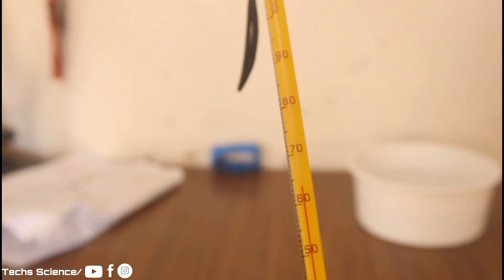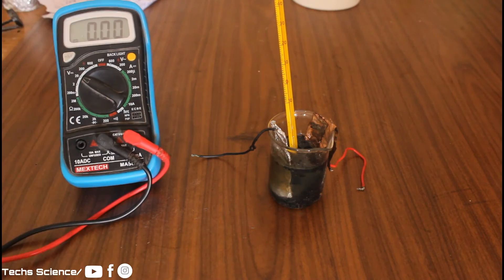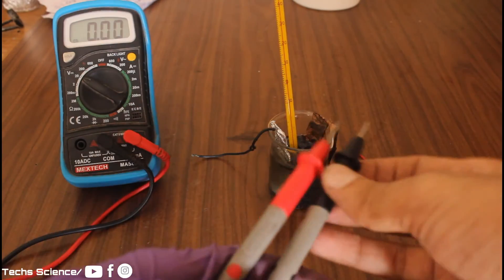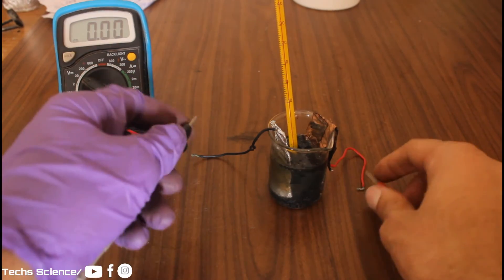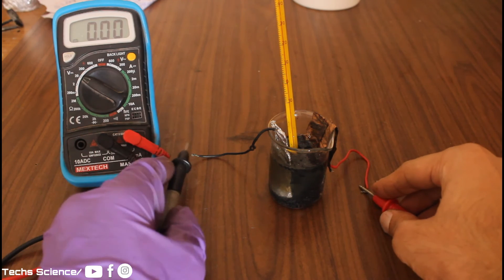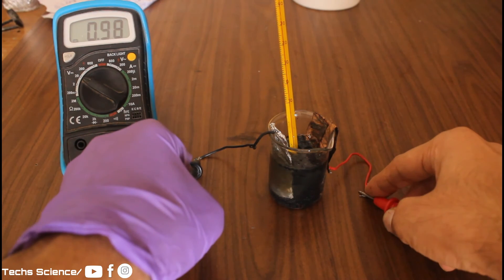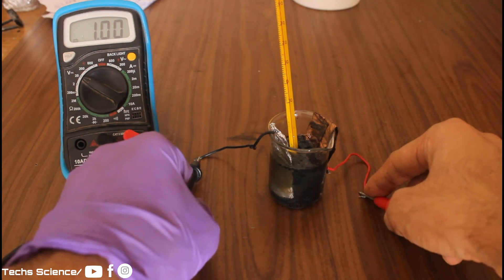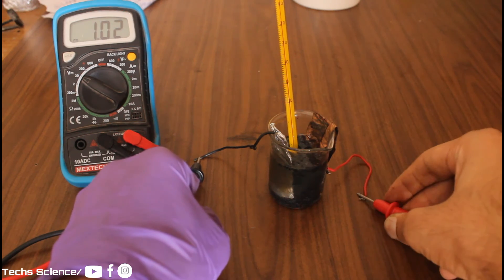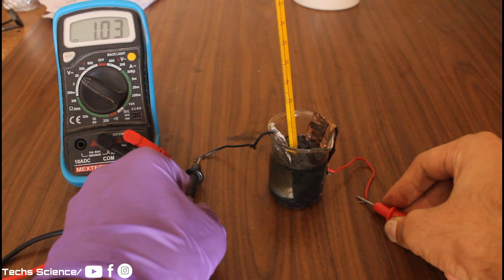Let us see the voltage generated with this battery. It's around 1.3 volts, which is quite low.